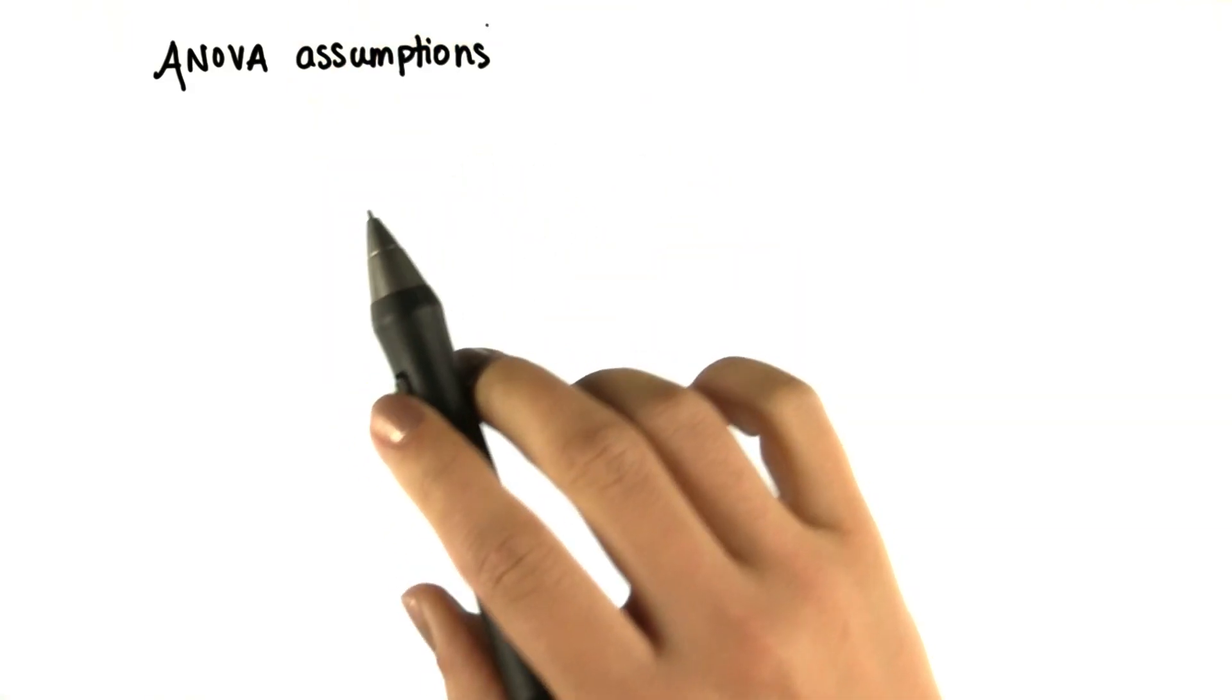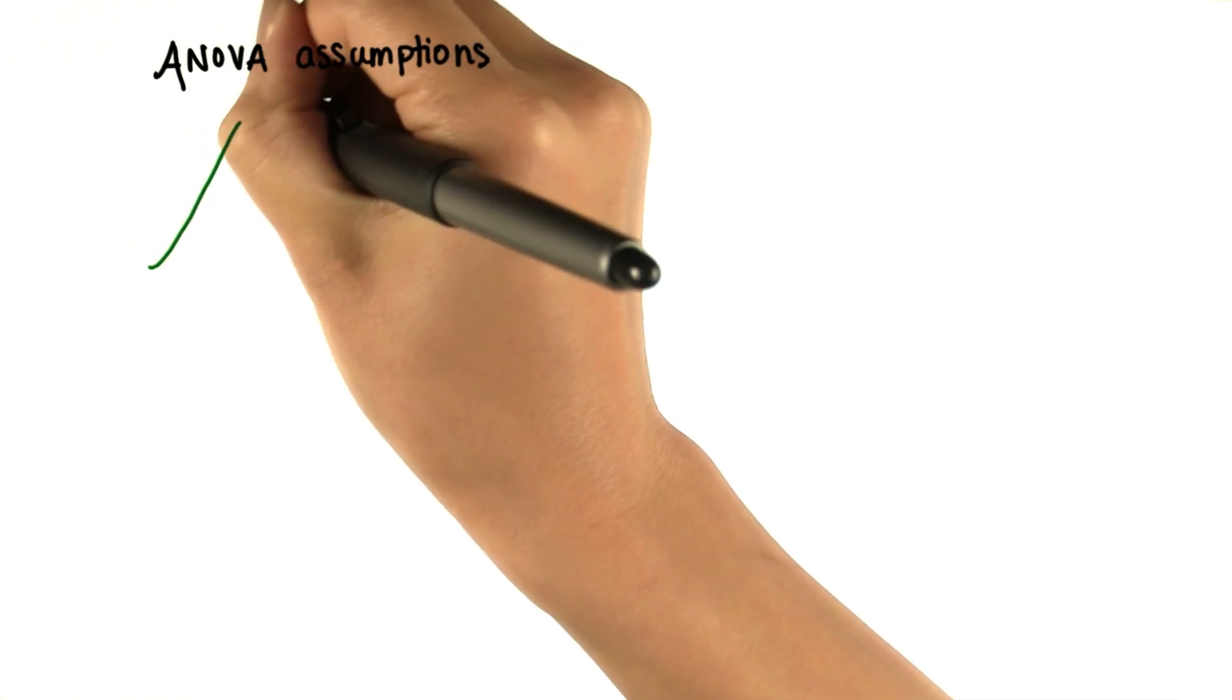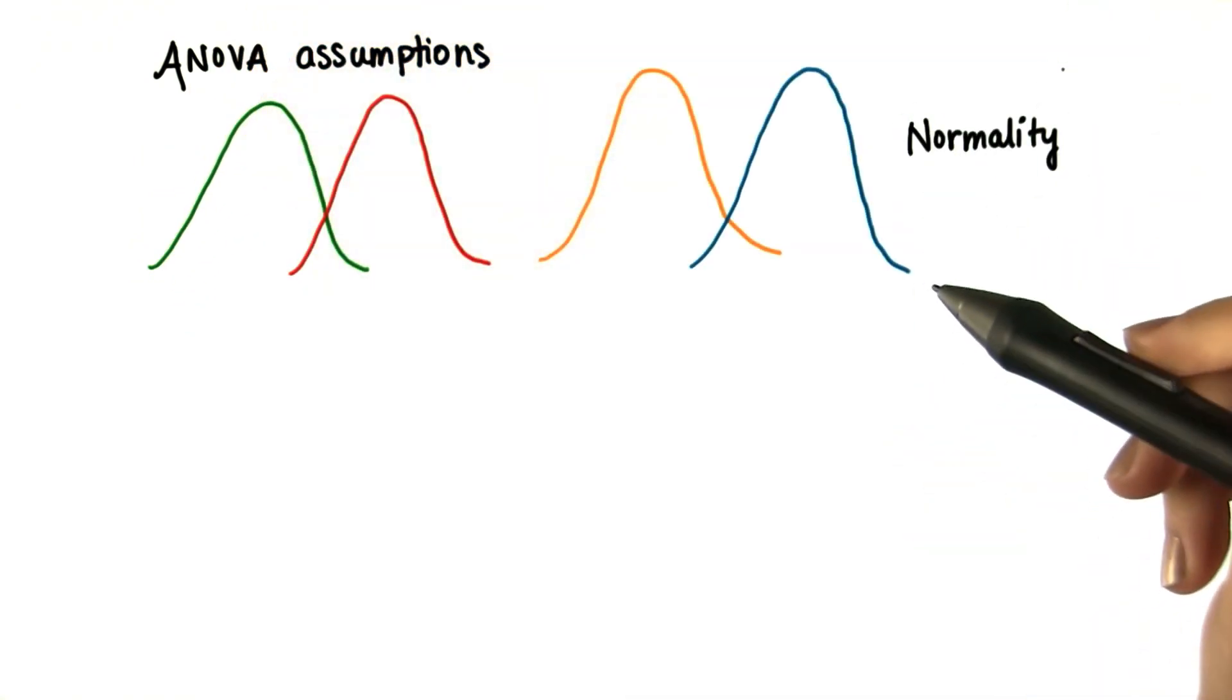Finally, we need to make some assumptions in order to use one-way ANOVA. The first is normality. All the populations from which the samples are from are normally distributed.